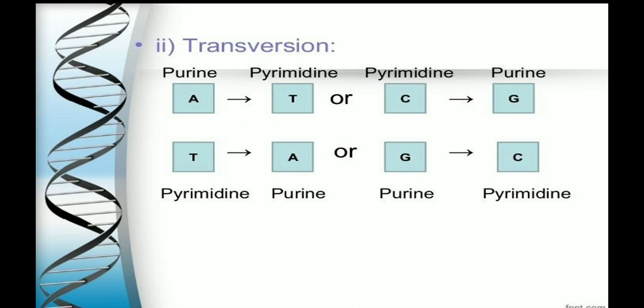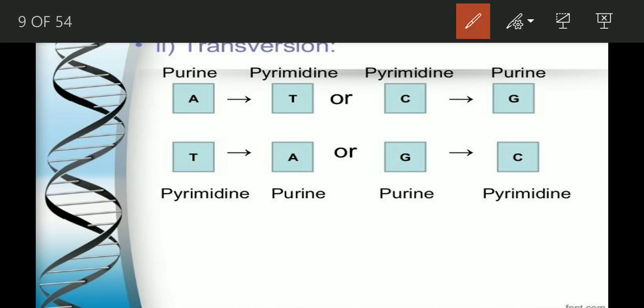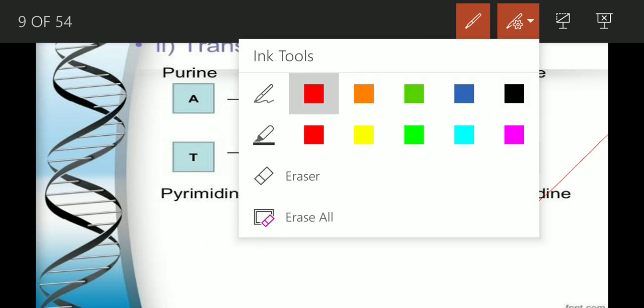Transversion involves the substitution of a purine for a pyrimidine or vice versa — for example, A to T and T to A. Pyrimidine is T and purine is A. Similarly, C to G, where pyrimidine C is replaced by purine G.